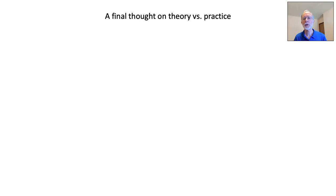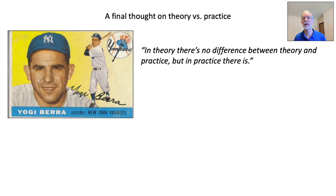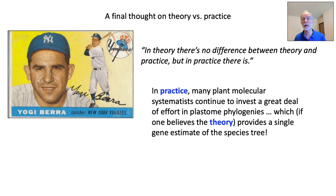I want to leave you with a final thought, courtesy of the great baseball philosopher Yogi Berra: in theory, there is no difference between theory and practice, but in practice there is. In practice, many plant molecular systematists continue to invest a great deal of effort in plastome phylogenies, which, if one believes the theory, provides a single gene estimate of the species tree. I ask you: does that make sense?